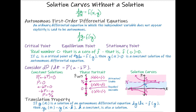In between zero and a over b, we notice that our p value is going to be positive, and a minus bp will also be positive. So we'll have a positive number times a positive number, resulting in a positive derivative, which means our function will be increasing on the interval from zero to a over b. So we'll put an arrow going up on our phase portrait in that interval.